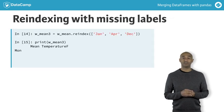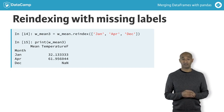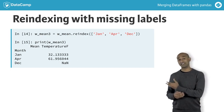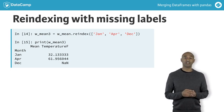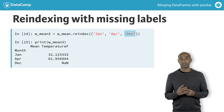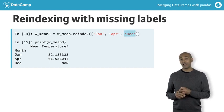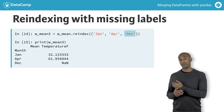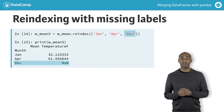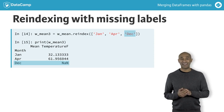The specific index labels provided to the reindex method are important. For instance, if we invoke reindex again using an input list containing a label not in the original data frame index — December in this case — an entirely new row is inserted and filled with the null value NaN, or Not a Number.